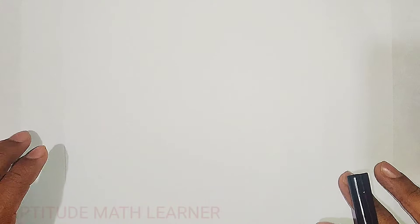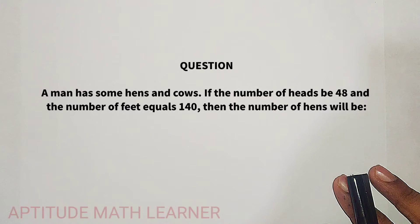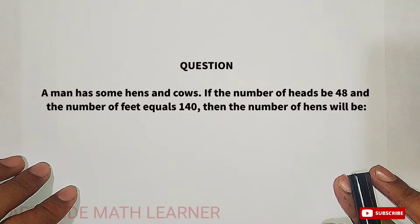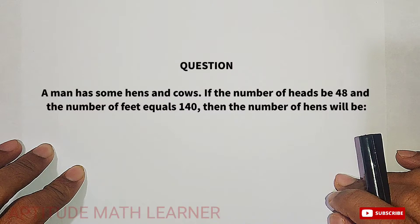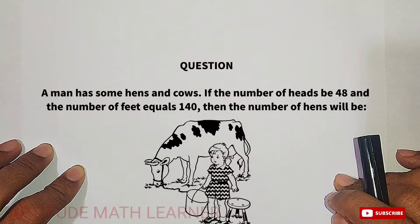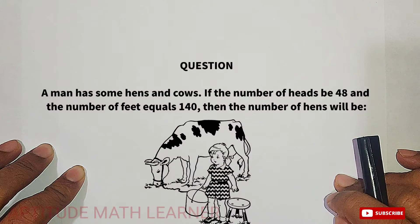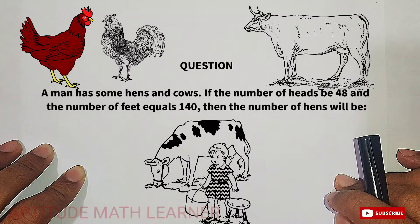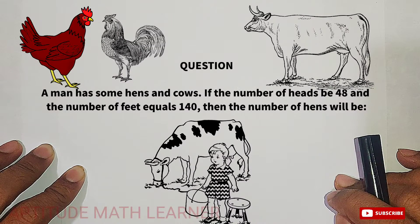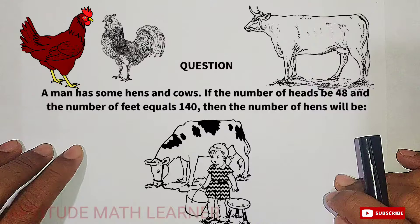Welcome to our YouTube channel Aptitude Math Learner. Today we have a very interesting question: a man has some hens and cows. If the number of heads is 48 and the number of feet equals 140, then the number of hens will be?